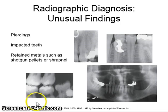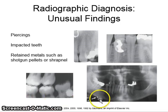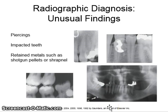Radiographs can also show up radiopacities that can be shotgun pellets, pieces of shrapnel, or other kinds of metallic objects that may be embedded either in the bone or the surrounding soft tissue.